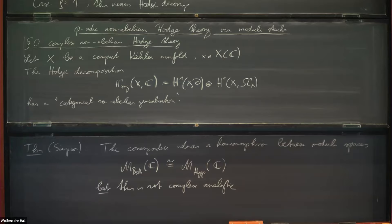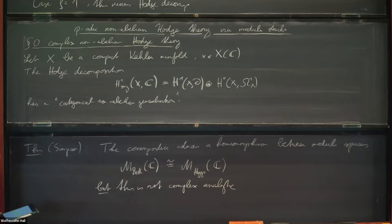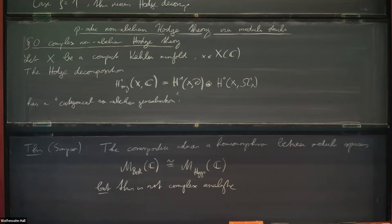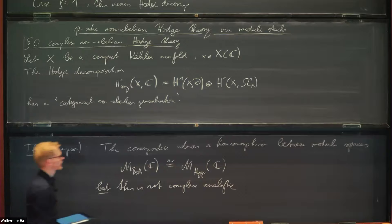That's everything I wanted to say about complex non-Abelian Hodge theory. Now, as a p-adic geometer, when I look at these beautiful results, I see a wish list. I want analogs of all of these results in the p-adic world, and that is going to be the goal of this talk: to explain how all of these statements have analogs in p-adic analytic geometry.